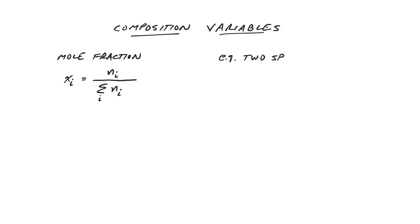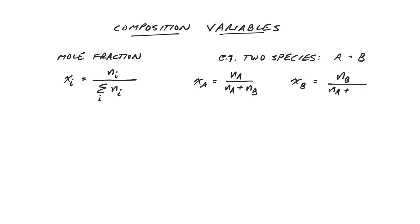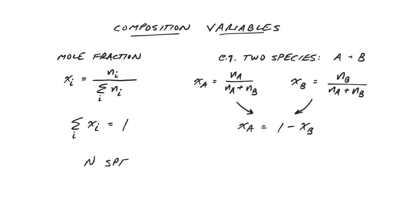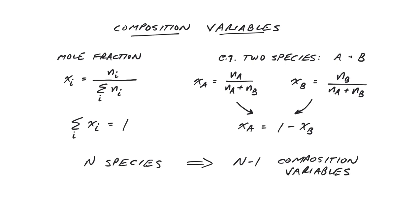For a binary mixture of two species A and B, we can define two mole fractions, Xa and Xb. However, these two fractions must always sum to one, meaning they are not independent. Thus, there really is only one composition variable needed to define the composition of a binary mixture. Speaking more generally, if we have capital N species present in our system, we'll need N-1 composition variables to fully define composition.